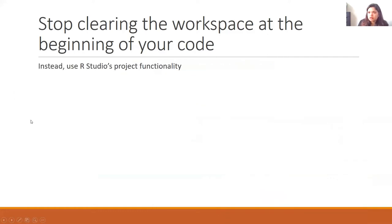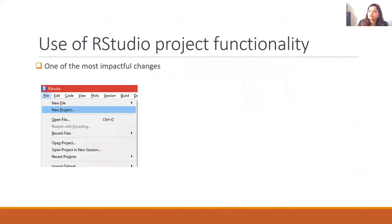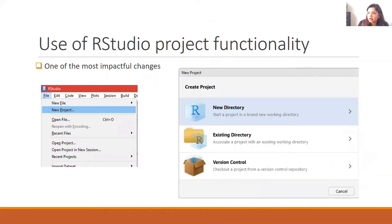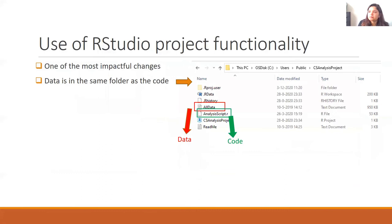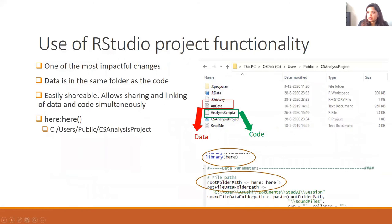So instead, if you used R Studio's project functionality, this is how it would go. You make a new project — you can either use a new directory for that or use an existing folder where your scripts are stored. You will see that you have the script, which is the .r file, and the data, which is a txt file containing details about my data, all in the same folder. So everything's stored in the same folder. It's easily shareable. It allows sharing and linking of the data and code simultaneously. And you use the here package.